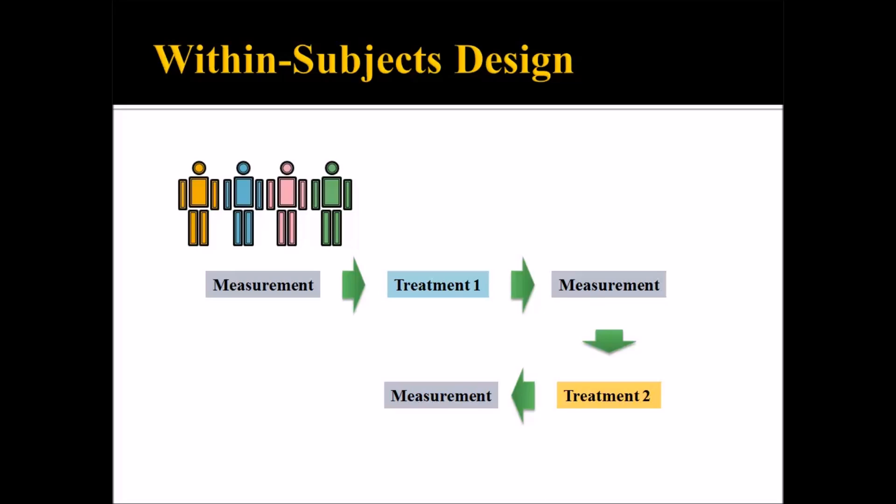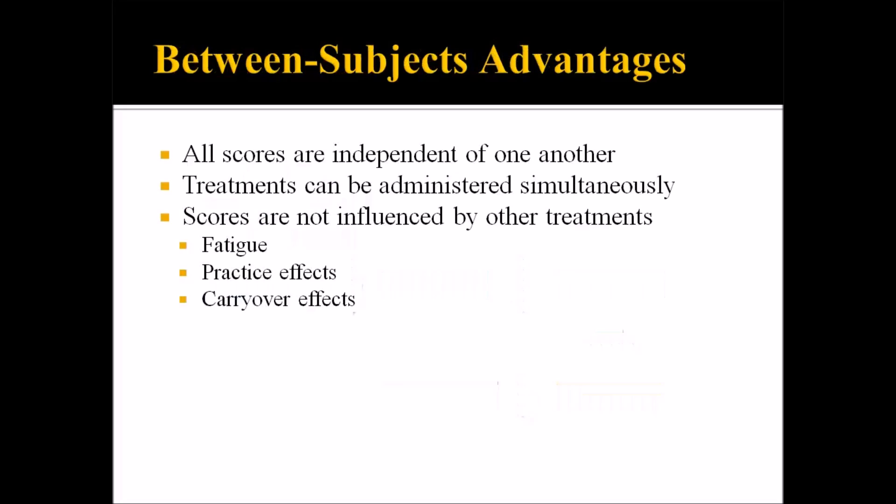Let's look at some of the advantages and disadvantages of these designs. The advantages of between-subjects designs: all the scores are independent of one another. The treatments can be administered simultaneously — you can't do that with a within-subjects design, because it's the same participants receiving each level of the independent variable. The scores are not influenced by other treatments, so you don't have to worry about fatigue, practice effects, or carryover effects.